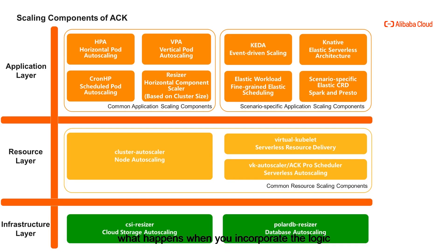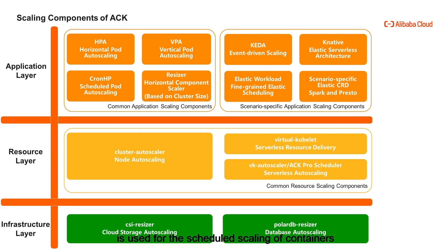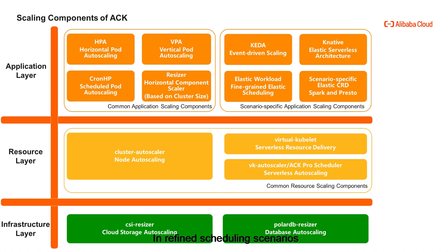The figure shows what happens when you incorporate the logic of building a scalable architecture into elastic components in ACK. Generic and industry-oriented models exist at the application layer. The main component of generic models is HPA, used for horizontal scaling of containers. VPA is used for vertical scaling, and Cron HPA is used for scheduled scaling of containers based on cluster size. In event-driven, industry-oriented scenarios, KEDA is provided. In refined scheduling scenarios, elastic workload is provided, and Spark and Presto are also improved.